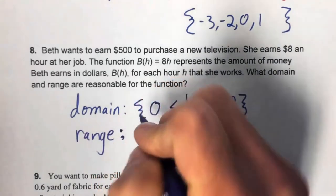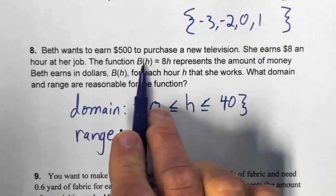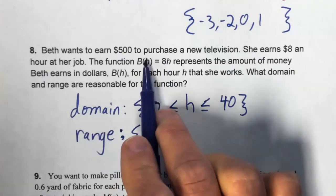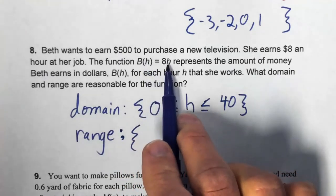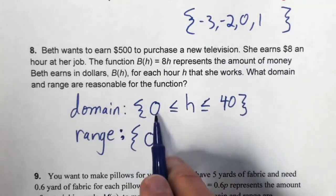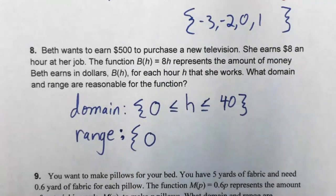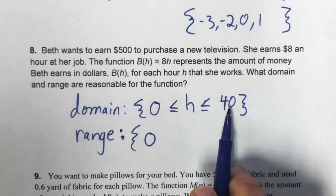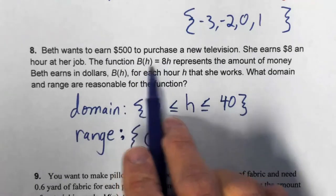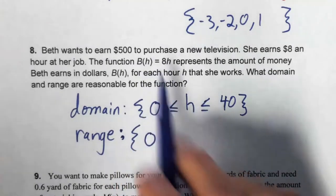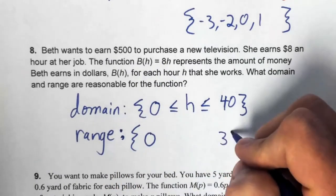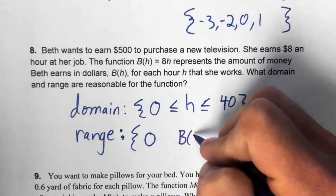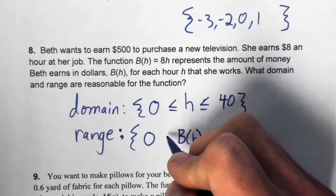For the range, plug the domain extremes into b(h) = 8h. b(0) = 8 times 0 = $0. b(40) = 8 times 40 = $320. So the range in set notation is 0 ≤ b(h) ≤ 320, representing her possible earnings in dollars.